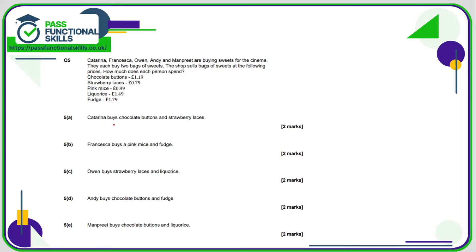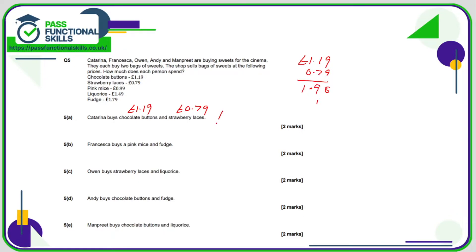Question five — still no calculator. Katarina buys chocolate buttons at £1.19 and strawberry laces at £0.79, so we just add these together. Using column addition: 9 plus 9 is 18, carry one; 7 plus 1 plus 1 is 9; 1 plus 0 is 1. That's a total of one pound ninety-eight pence.